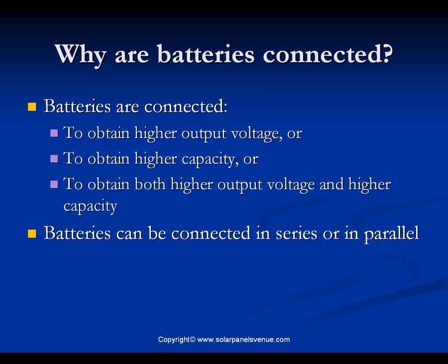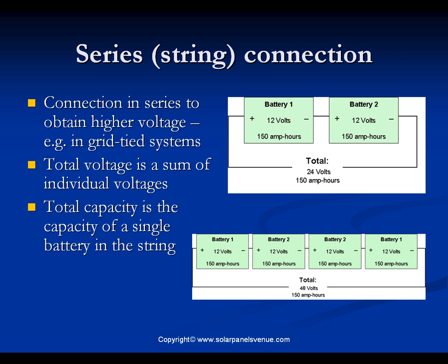Batteries are usually connected in a certain way. We connect batteries to obtain higher output voltage, higher capacity, or both. Batteries can be connected in two ways: in series or in parallel. In series connection, also called a string, the total voltage is the sum of individual voltages, while the total capacity equals the capacity of a single battery in the string.